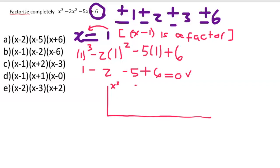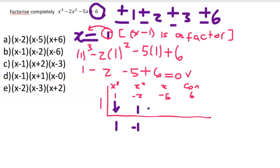For synthetic division I take the coefficients: the coefficient of X cubed is one, of X squared is negative two, of X is negative five, and the constant is six. Using the root one: bring down the one, multiply one times one to get one, add to negative two to get negative one, multiply one times negative one to get negative one, add to negative five to get negative six, multiply to get negative six, add to get remainder zero.